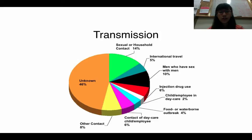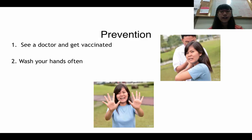There are some additional transmission cases. About 46% of cases have an unknown source, followed by 14% transmitted through sexual contact or household contact, and men who have sex with men account for 10% of cases.